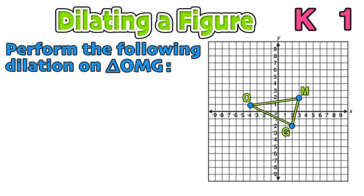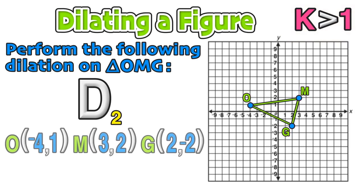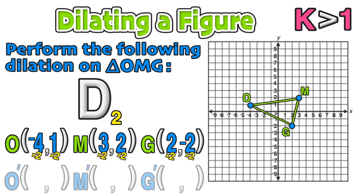For our first example, we are going to perform a dilation on triangle OMG. Notice that the scale factor k is 2, which is greater than 1, so this figure is going to be stretched out to a larger size. We'll start by writing down the coordinates of the vertices of triangle OMG, and then applying that scale factor of 2 to each x and y coordinate. In this case, we are multiplying all of them by 2.